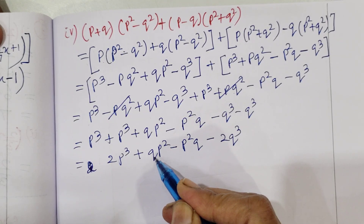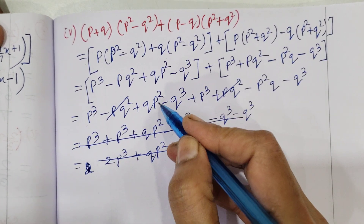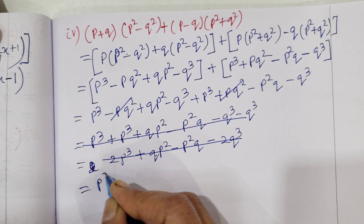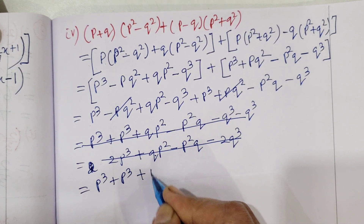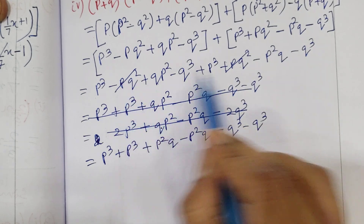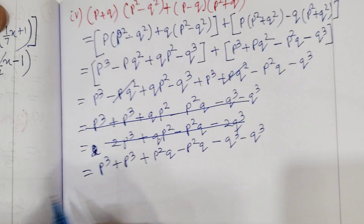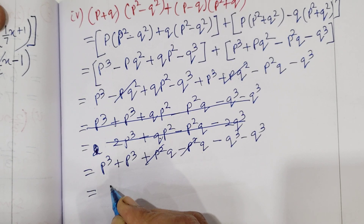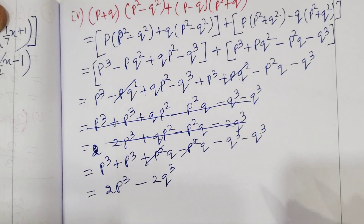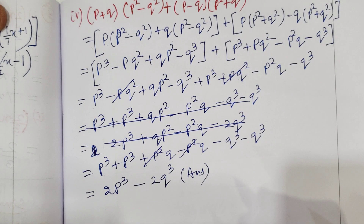यहाँ पर भी देखें — यह दोनों भी cancel हो जाएंगे। Plus P²Q और minus P²Q को arrange करके cancel कर सकते हैं। तो P³ plus P³ = 2P³ और minus Q³ minus Q³ = minus 2Q³। तो इस question का answer है 2P³ minus 2Q³।